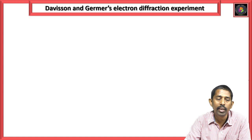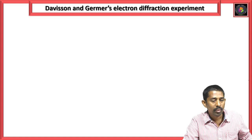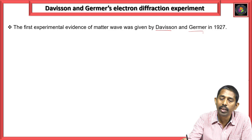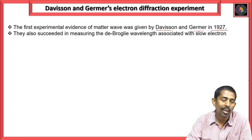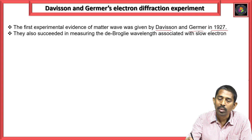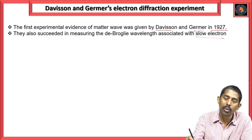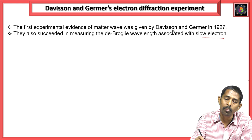One experiment that demonstrates the duality of electrons is the Davisson and Germer electron diffraction experiment. The first experimental evidence of matter waves was given by Davisson and Germer in the year 1927. They succeeded in measuring the de Broglie wavelength associated with slow-moving electrons.